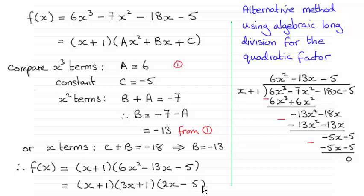Now there are two ways that we can do this. We can either do it by looking at (x + 1) multiplied by a quadratic factor and then comparing particular terms, or you can use an algebraic long division method to get that quadratic factor.